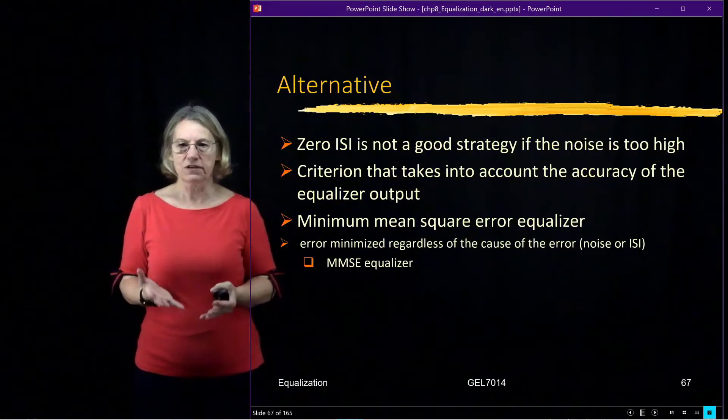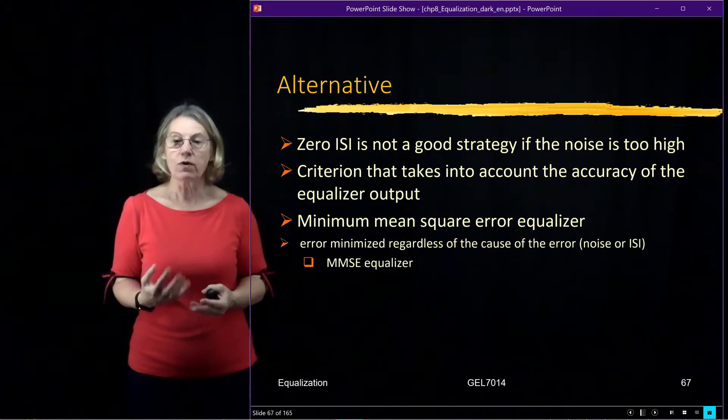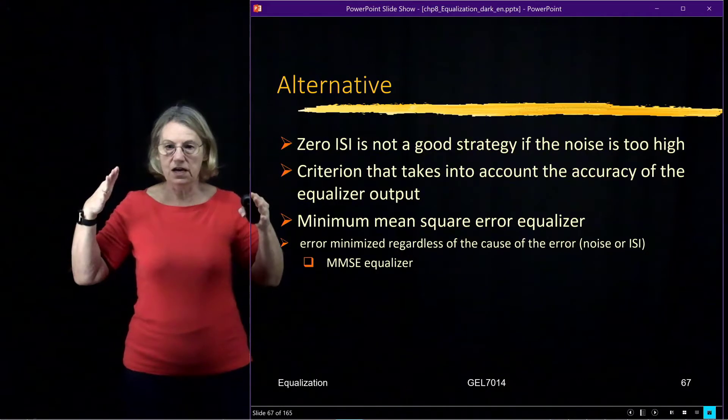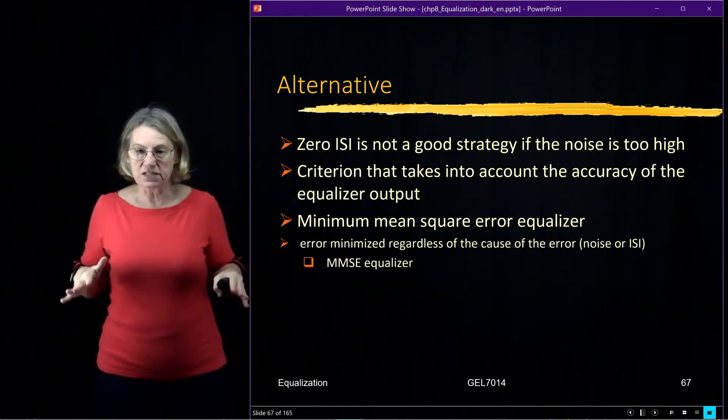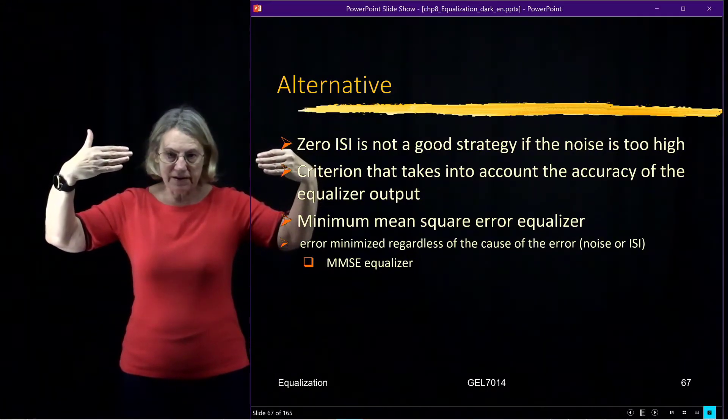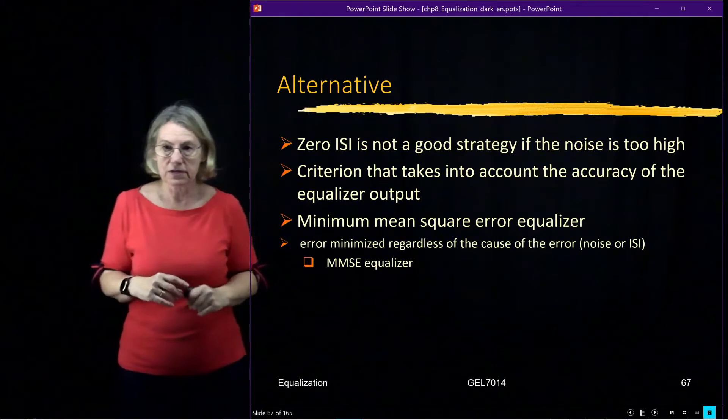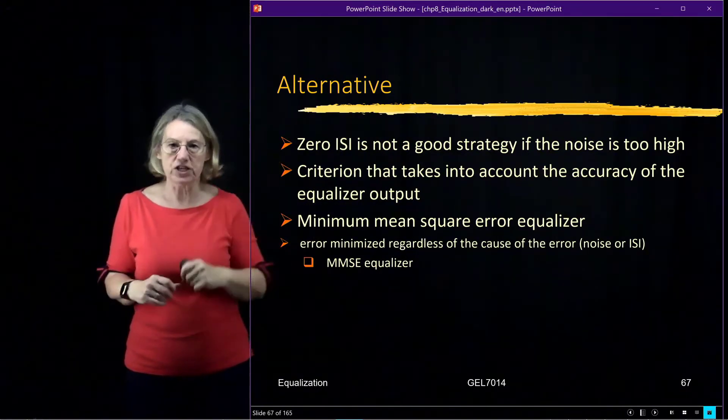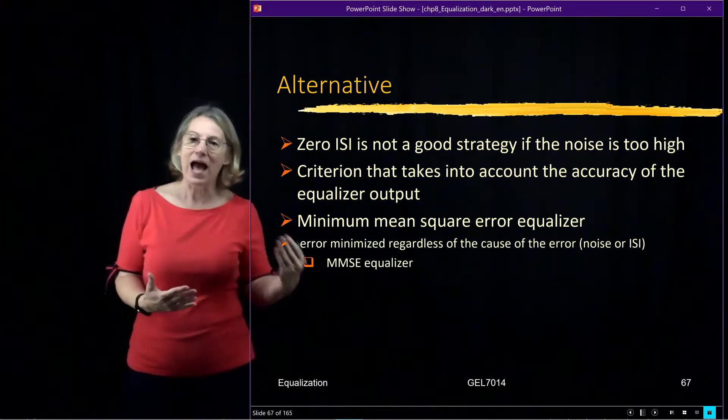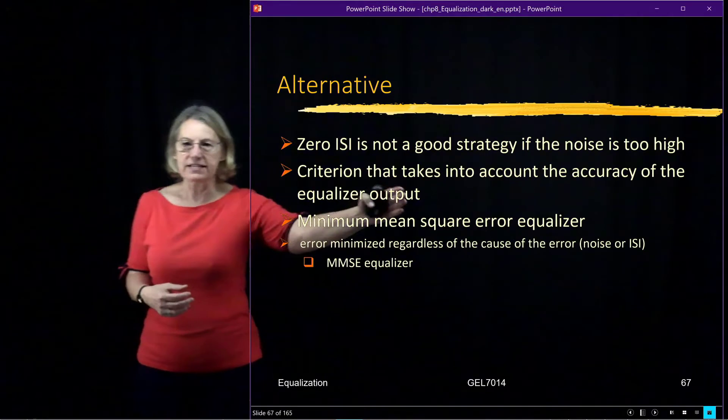So the zero-forcing equalizer that forces the intersymbol interference to go to zero is not a good strategy when the noise is high. The inversion that the zero-forcing equalizer implements means that the noise is going to be enhanced. If there's not much noise, it's not a big deal. But if it is too noisy, this is just not a good strategy. So what we need is something that actually takes into consideration what is happening after the equalizer, not just what is happening to the ISI after the equalizer, but what's coming out of the entire output.